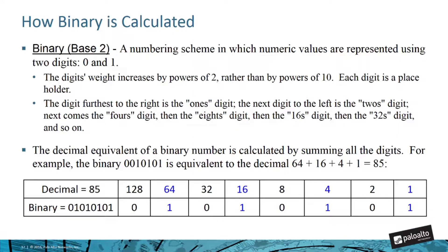So binary is a numbering scheme in which numeric values are represented using two digits, 0 and 1. We're going to take a look at how binary is calculated. The digit's weight increases by powers of 2 rather than by powers of 10. Each digit is a placeholder. The digit furthest to the right is the 1's digit. The next digit to the left is the 2's digit, next comes the 4's digit, then the 8's digit, then the 16's digit, then the 32's digit, and so on. The decimal equivalent of a binary number is calculated by summing all the digits. For example, the binary number 01010101 is equivalent to the decimal 64 plus 16 plus 4 plus 1 equals 85.